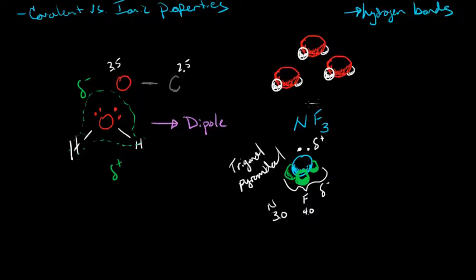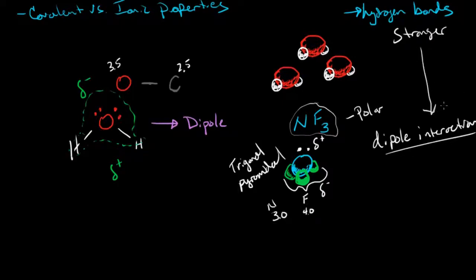This end is less negative than this one, so this will have a more positive. If it's less negative, it's more positive. So, because of that, here is a molecule that doesn't have hydrogen in it, but it would be polar. Okay. And so this would have a dipole interaction or a dipole-dipole attraction. Okay. It is weaker.